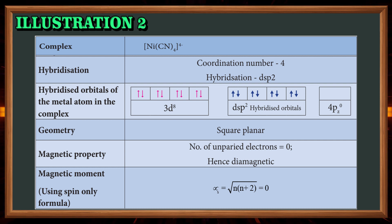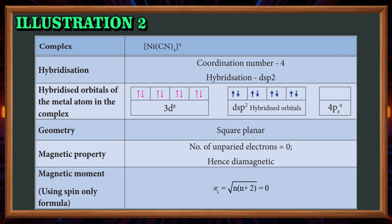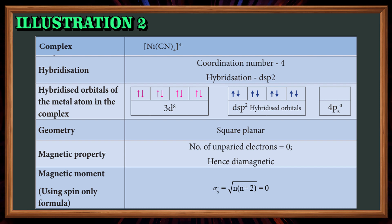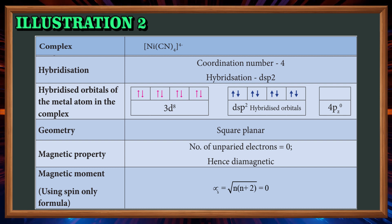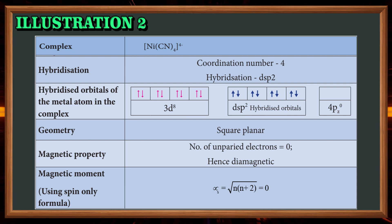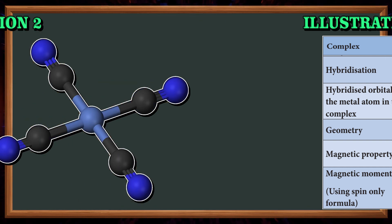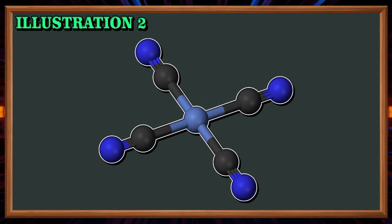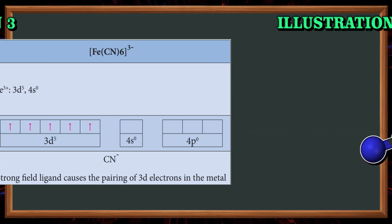Magnetic property: number of unpaired electrons is 0, hence it is diamagnetic. The magnetic moment μs = √(n(n+2)), with n = 0, so μs = 0.